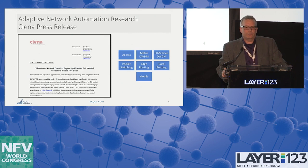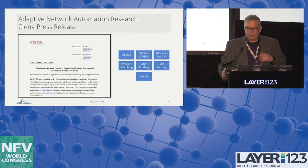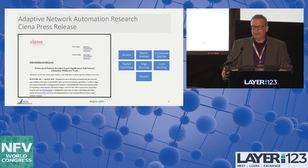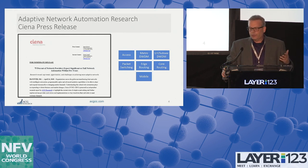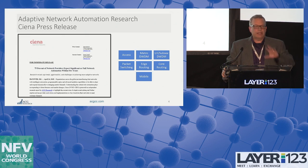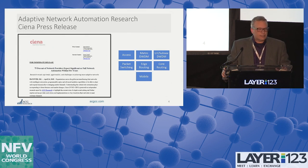There was a press release this morning that came out from Siena, our sponsor partner for the work we just completed around adaptive network automation. You can go to the Siena website to see that press release. It was an independent study conducted by us where we surveyed over 200 different types of service providers including internet content, cloud, and large enterprises. We were focused mostly on the network outside of the data center — access, metro optical, long haul, the IP layer, edge routing, core routing, and also mobility.